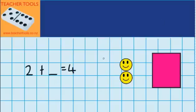So I want you to imagine two counters and think about how many more counters must there be under here for there to be four counters in total.